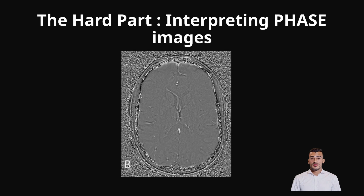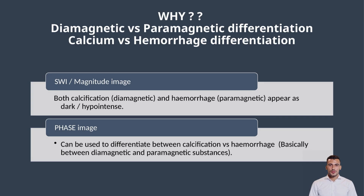Now let's come to the hard part — interpretation of phase images. Why do we need those images when we can use SWI images for identifying substances causing susceptibility changes? The answer is that we want to go a step further and know whether those susceptibility changes were caused by diamagnetic or paramagnetic materials. The basic point is to identify whether the culprit is calcification or blood products. Calcifications are diamagnetic and blood products are paramagnetic, and thus they give opposite colors on phase images — so the use of phase images is mainly to differentiate between calcifications and hemorrhage.